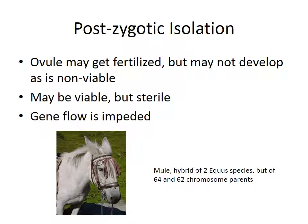Here is the picture of a mule — a hybrid of two species of Equus. It's a cross between a donkey and a horse, and what you end up with is a mule. You don't get it to be fertile because one parent has 64 chromosomes and the other has 62 chromosomes, and the odd, uneven number of chromosomes doesn't allow any gametes to form.